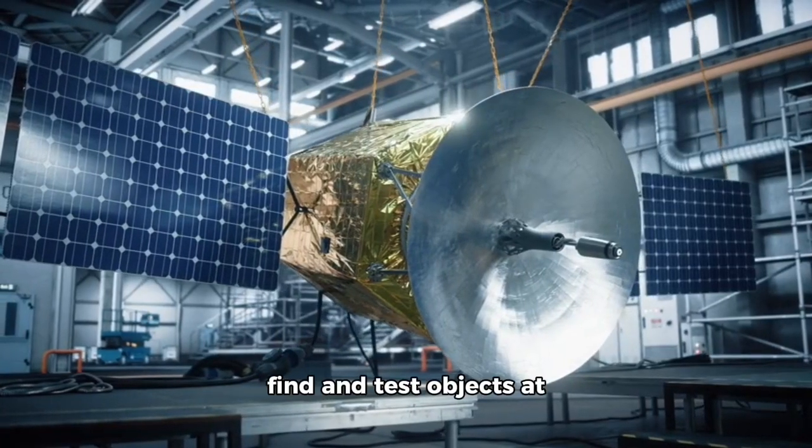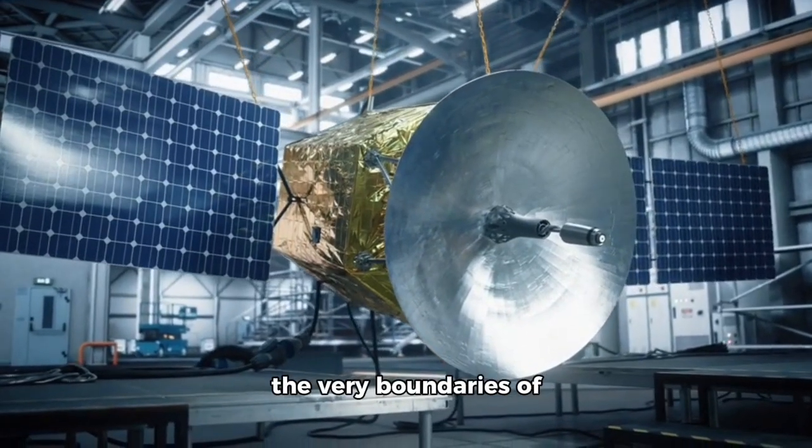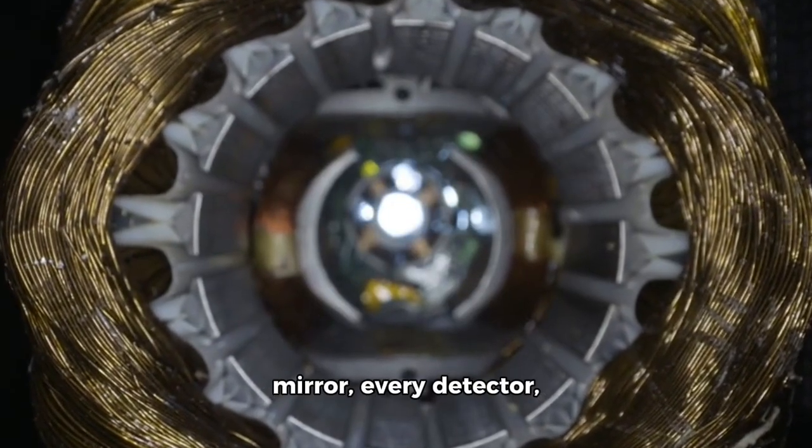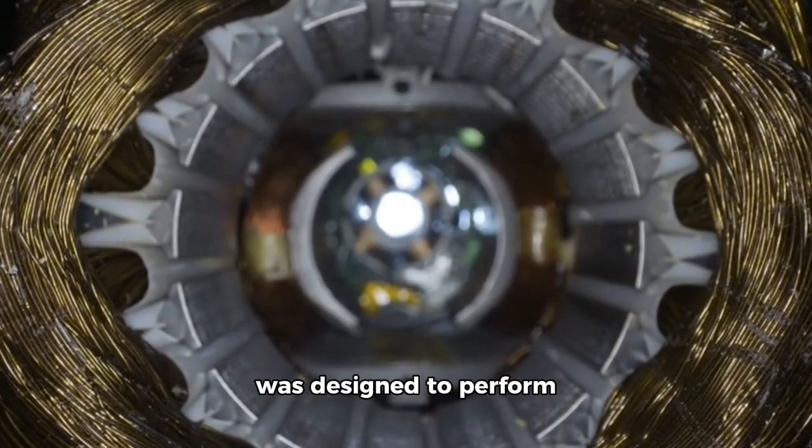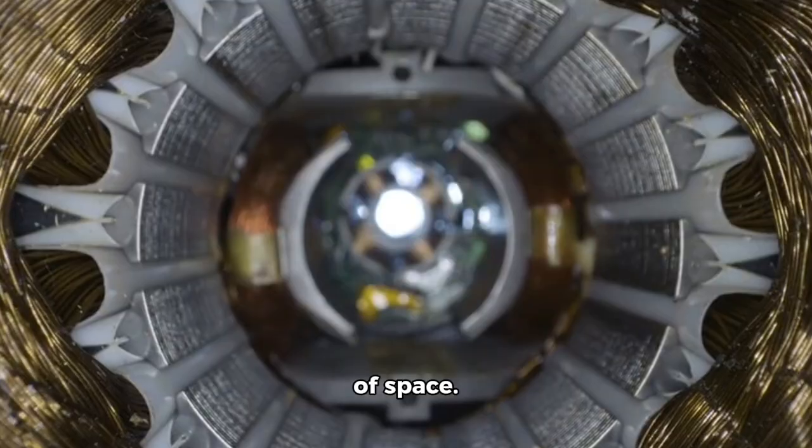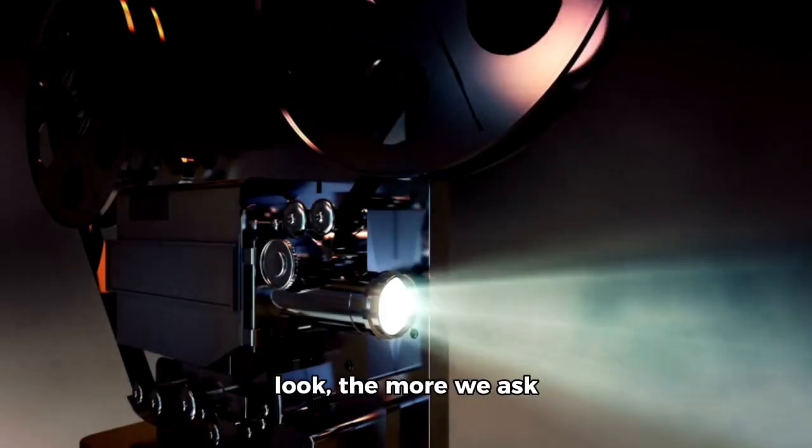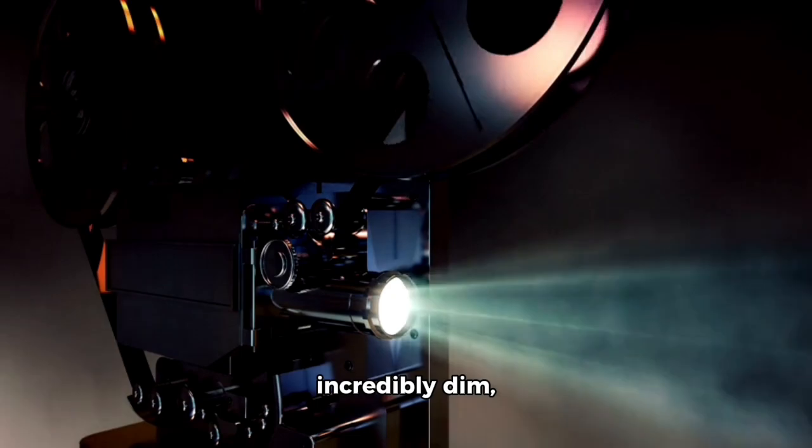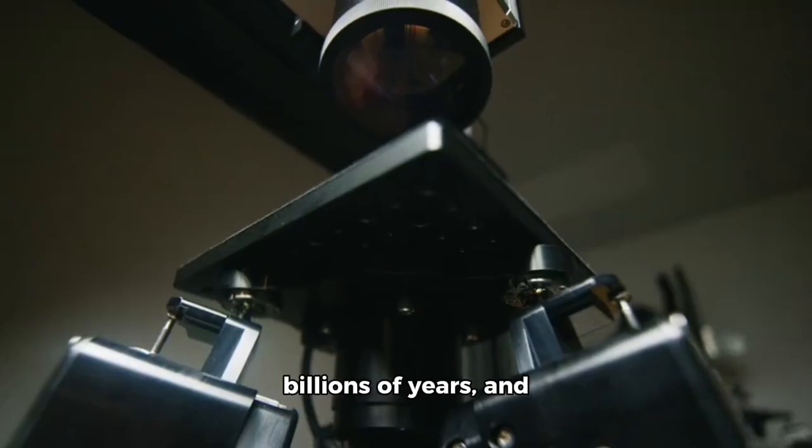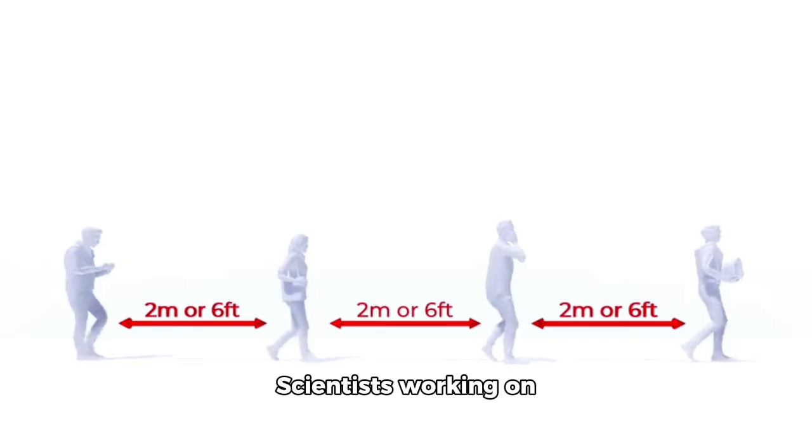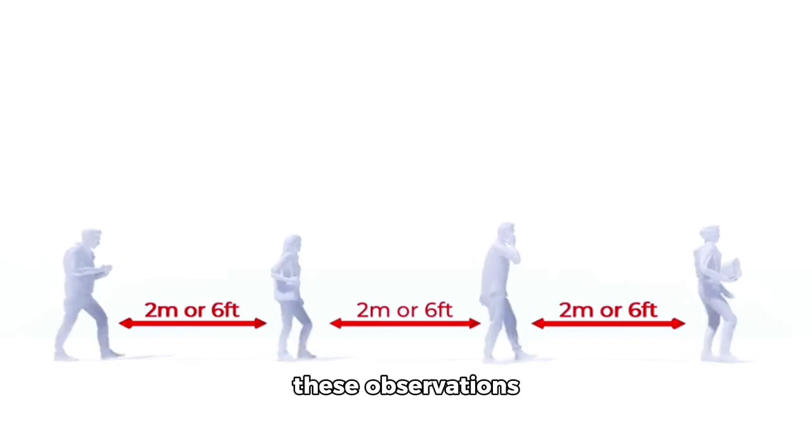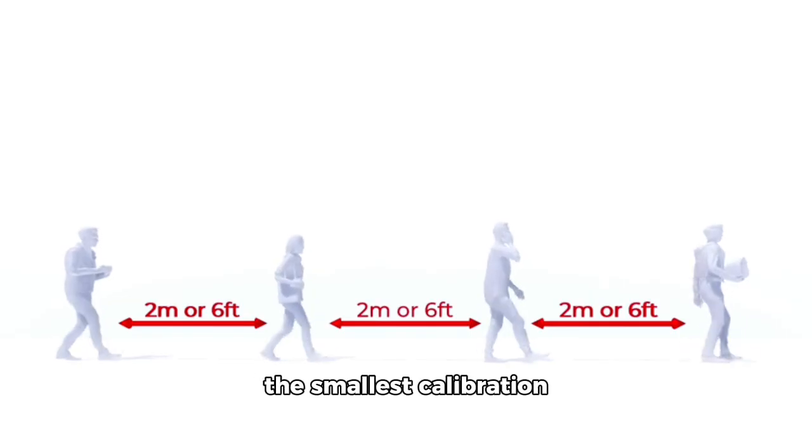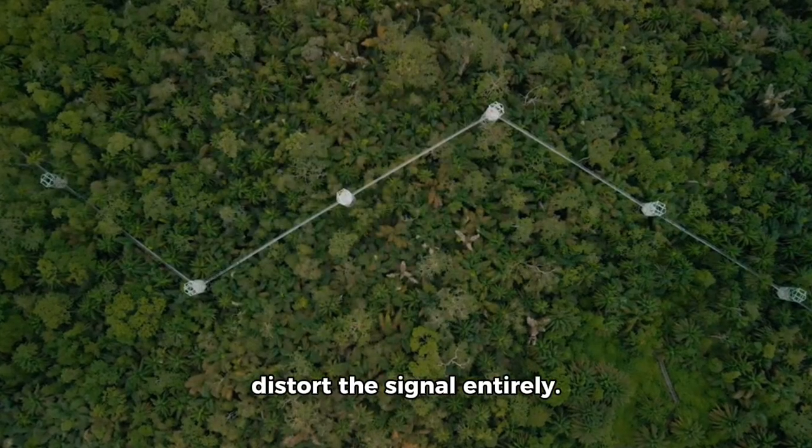Trying to get JWST to find and test objects at these extremes pushes the very boundaries of its engineering. Every segment of the mirror, every detector, and every cooling system was designed to perform flawlessly in the vacuum of space. However, the more we look, the more we ask the telescope to capture photons that are incredibly dim, stretched across billions of years, and red-shifted into the far infrared. Scientists working on these observations describe them as walking a tightrope between detection and noise, where the smallest calibration error could erase or distort the signal entirely.